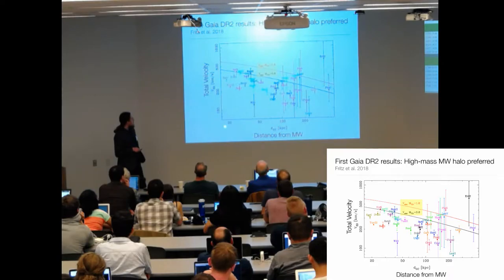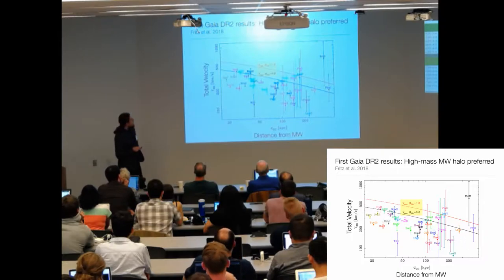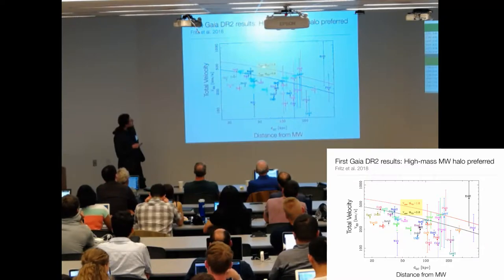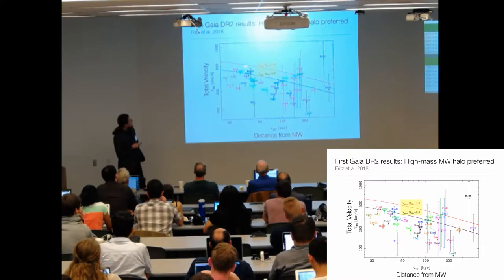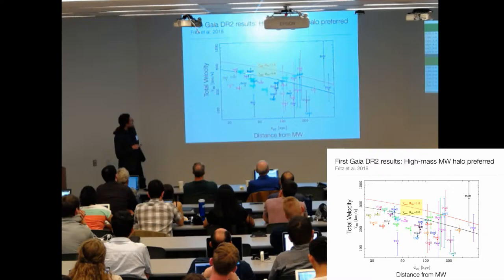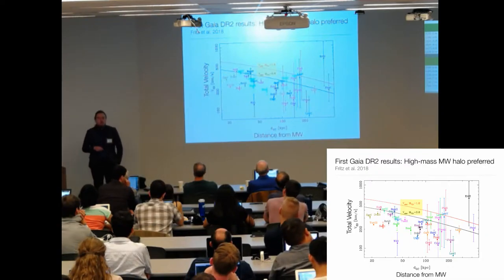One of the plots shows distance from the Milky Way versus total velocity of satellite galaxies. You can see the further out we go, the less certain our measurements are. But it looks like these proper motions, these total velocities, are more consistent with a heavy Milky Way. This is the escape velocity for a Milky Way of 1.6 times 10^12 solar masses in contrast to a light Milky Way. So it looks like we have a relatively heavy Milky Way halo.